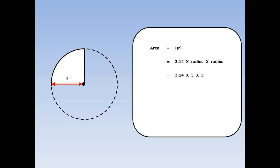The radius here is 3, so it's 3.14 times 3 times 3. The area of the whole circle is 28.26 centimetres squared. But I don't want the whole circle, I want a quarter of a circle, so I need to divide by 4. My final answer is 7.065 centimetres squared.